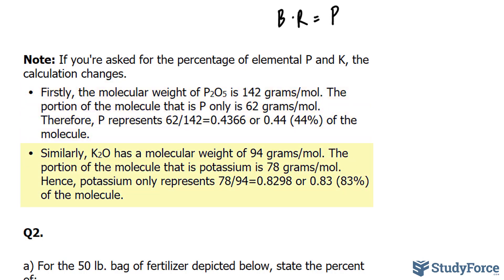Similarly, K2O has a molecular weight of 94 grams per mole. The portion of the molecule that is potassium only is 78 grams per mole. Again, potassium only represents 83% of the molecule. Take a look at the calculation.